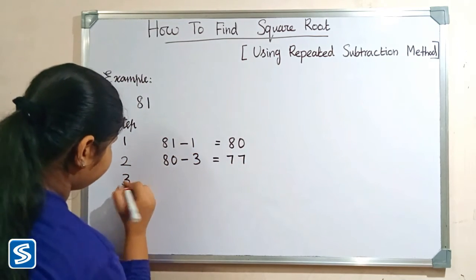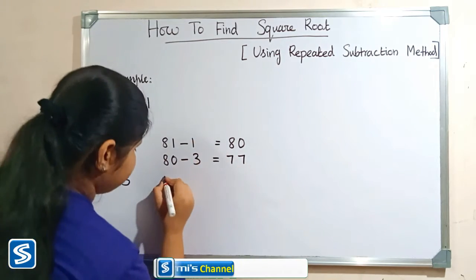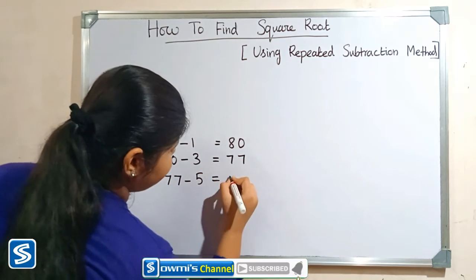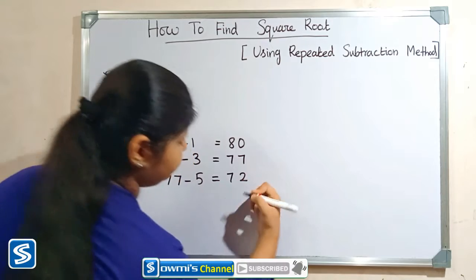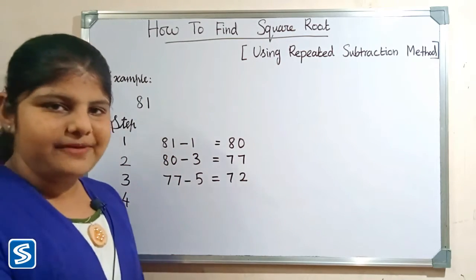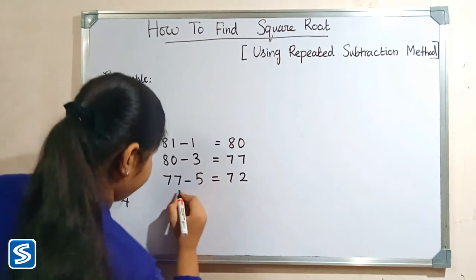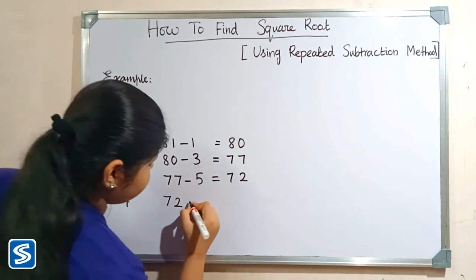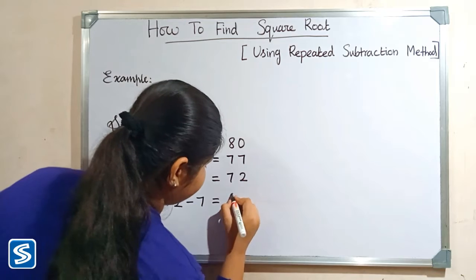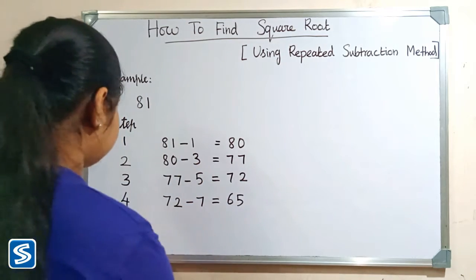Step 3: Subtract 5 from 77. 77 minus 5 will be 72. Step 4: Subtract 7 from 72, so 72 minus 7 will be 65.